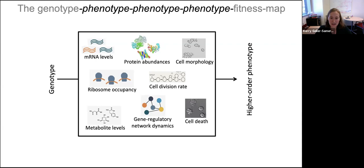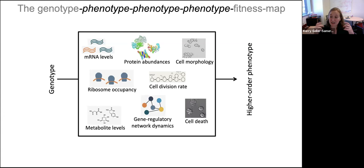This matters to a lot of fields. For evolutionary biologists, we want to look at a mutation and predict whether it's going to be beneficial and rise to high frequency, or whether it's going to be deleterious. In medicine, we want to predict whether a mutation predisposes someone to disease. All these predictions are a lot more complicated if genetic changes do lots of different things, and we have to integrate that information to make a final prediction on whether it's good or bad.